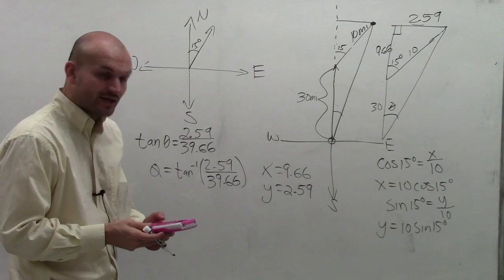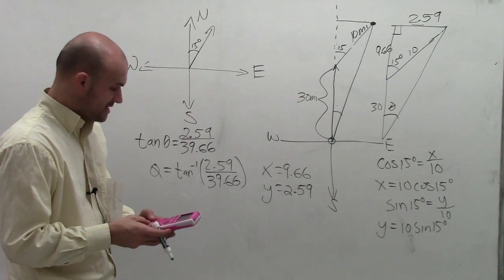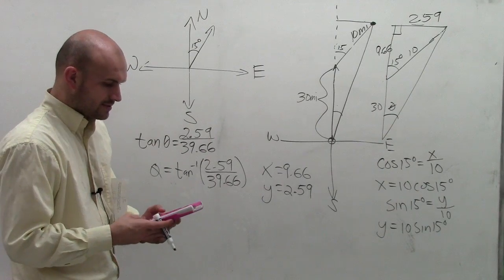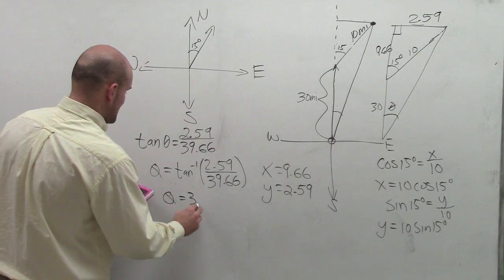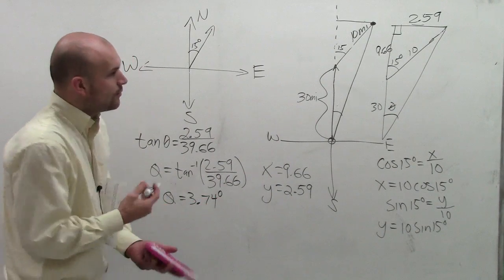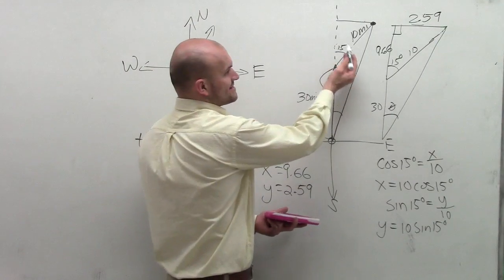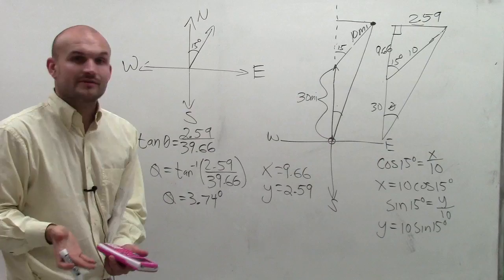So therefore, I take my calculator and I go inverse tangent of 2.59 divided by 39.66. And therefore, I get theta equals 3.774 degrees, which would make sense because we know it has to be smaller than 15 degrees and obviously greater than zero.